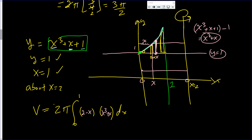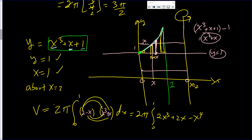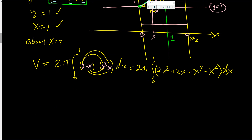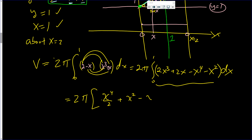Once we have that, it's routine. You distribute: 2π times (2 − x)(x³ + x), giving 2x³ + 2x − x⁴ − x² times dx. Now we integrate this.